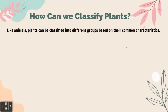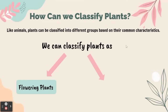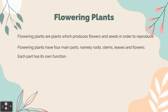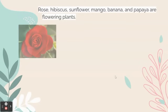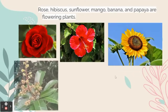We can classify plants as flowering plants and non-flowering plants. Flowering plants are plants which produce flowers and seeds in order to reproduce. Flowering plants have four main parts, namely root, stem, leaf, and flowers. Each part has its own function. Rose, herbaceous, sunflower, mango, banana, and papaya are flowering plants.